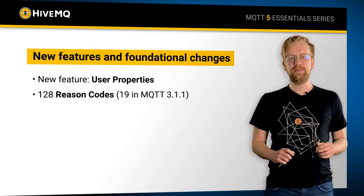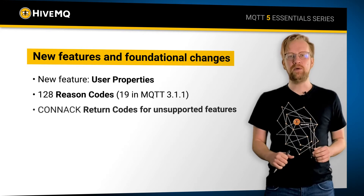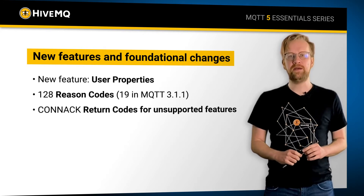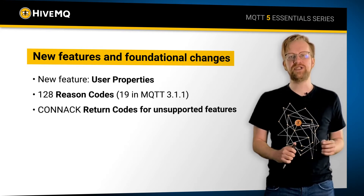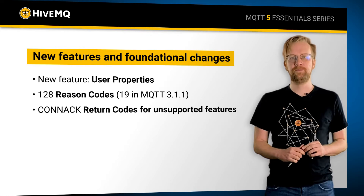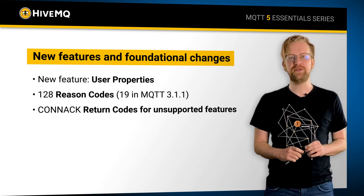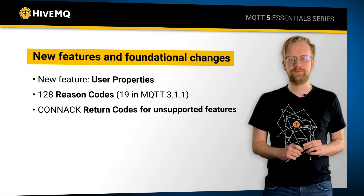Another big change is that the broker can now let the client know in the connect packet about which of these optional features are supported. Please note that some of these features are already known from MQTT 3 and are very popular.